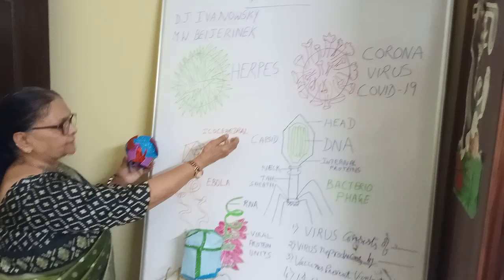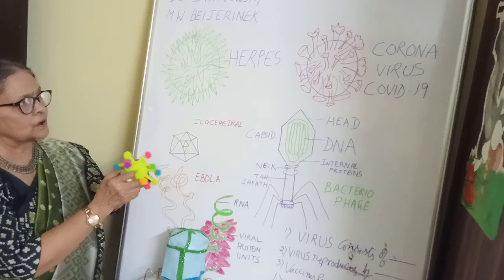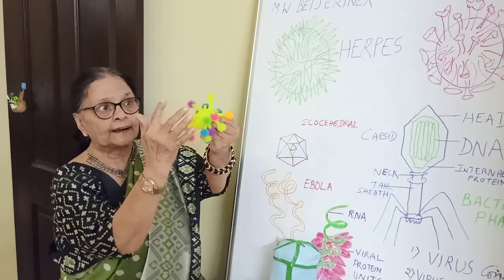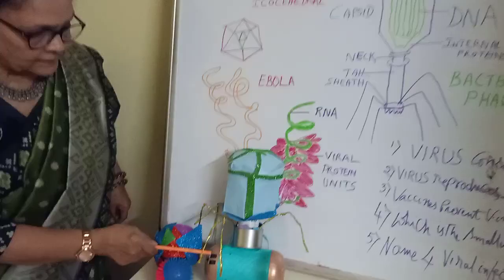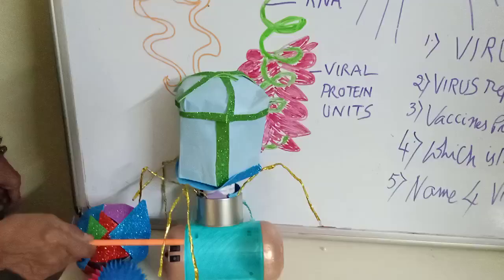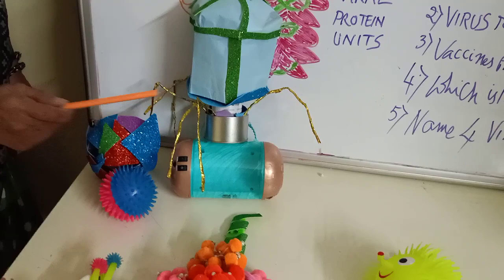Coronavirus has projections with sucker stripes which attach to the host cell and damage the cells. A virus attacking a bacterium is called a bacteriophage. It has tail fibers which insert into the bacterium and damage the cell.